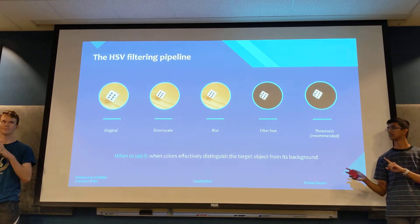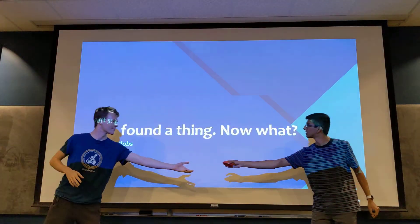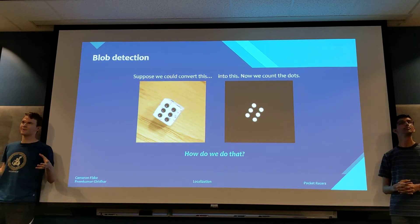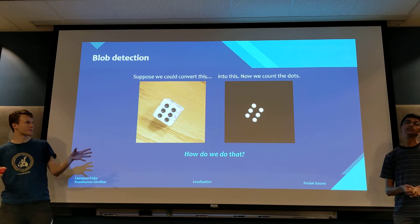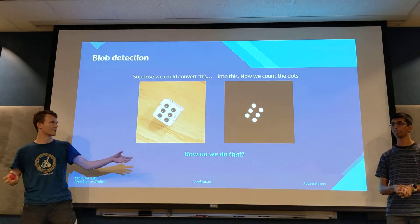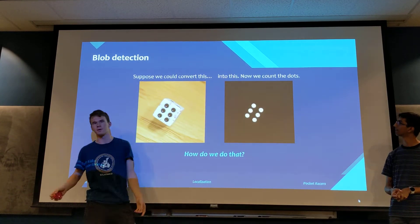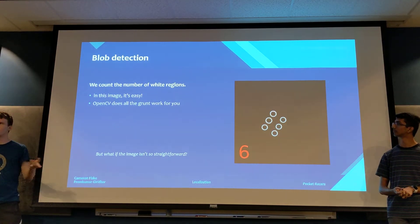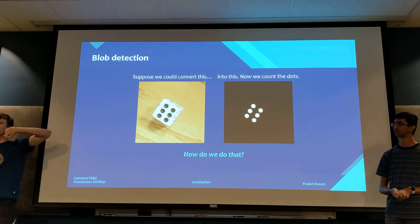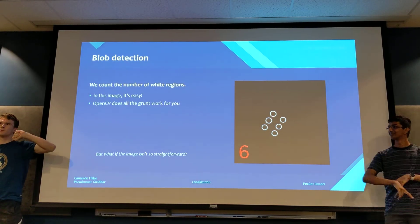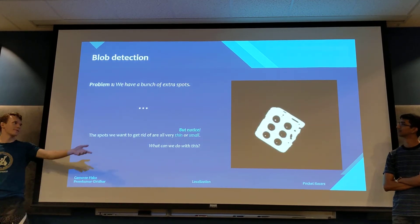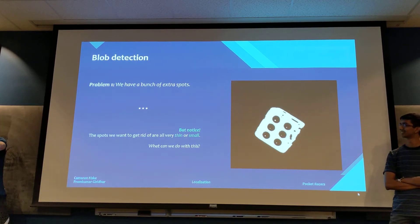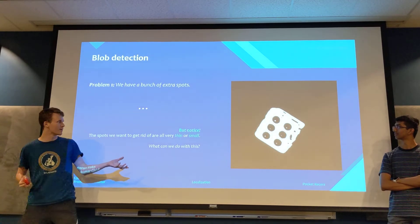Now we're going to talk about blob detection. What is a blob? After masking, some pixels are white and some are dark. A blob is a continuous block of pixels all touching each other. On a die image we care about the six white blobs — the dots. We can count the white regions to count the dots. OpenCV basically just does that for you. However, there can be issues if your image has weird white dots inside your black regions and vice versa. These noisy artifacts are typically really small.